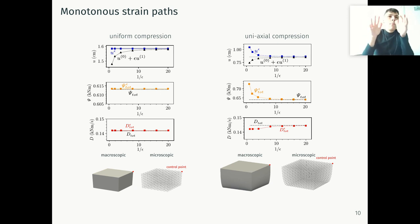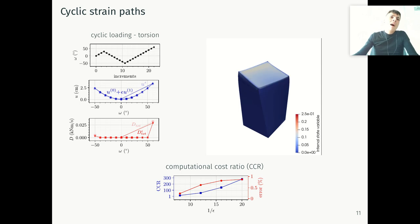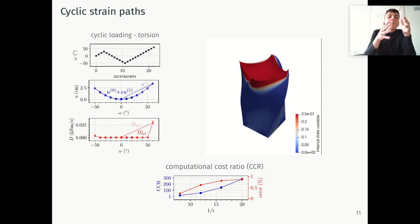Then we can move towards more complex loading paths, like here. We have a cyclic loading path in which we apply torsion at the upper bound of this structure, and after this path, we just unload suddenly the structure. On the right, you can see the evolution of one of the thermodynamically unsupervised internal state variables, while below we compare the computational cost ratio. You can see here that the double-scale homogenized model with TANN allows us to accelerate by several orders of magnitude the computational cost of the original micro-mechanical model.